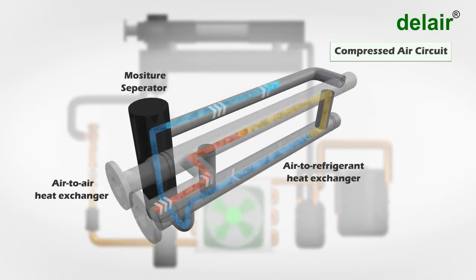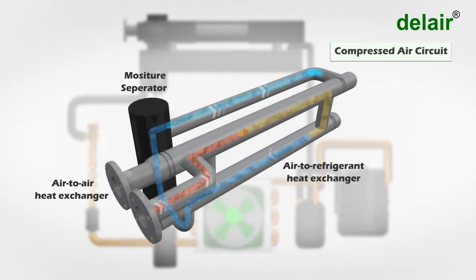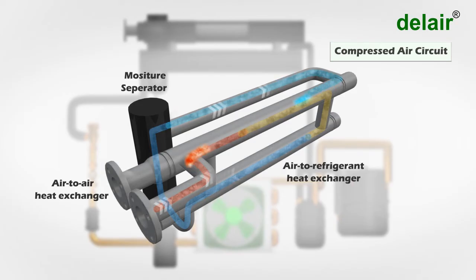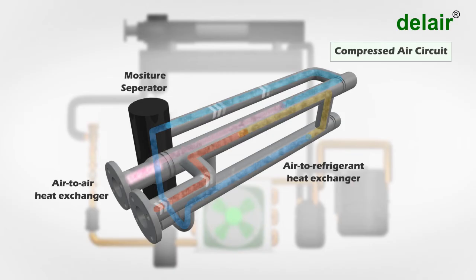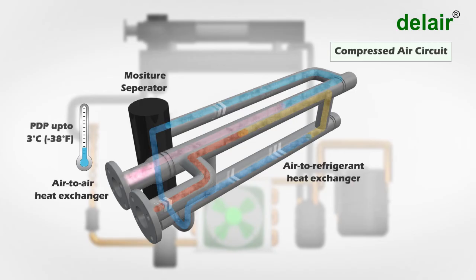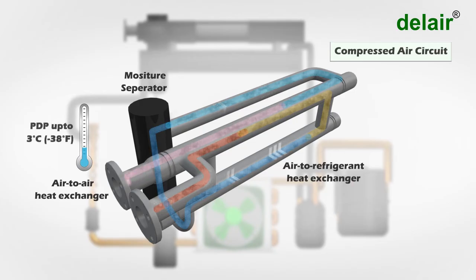The cool dry air then enters into the air-to-air heat exchanger and is warmed up by the incoming hot air to near room temperature. The outgoing air has achieved a 3 degrees Celsius pressure dew point and is now dry.